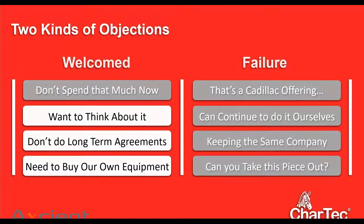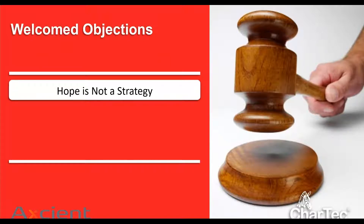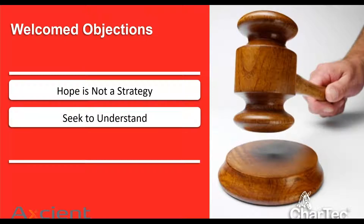Hope cannot be your strategy. You cannot hope these objections don't come up. You don't want to hope they don't say 'this is more than we're spending right now' — even though the last 15 companies you presented to asked that same question. Hope is not our strategy. We need to be prepared. We can count on these welcomed objections coming up — one or more of them — 95% of the time. Get good at answering all of them. They should not be a surprise.